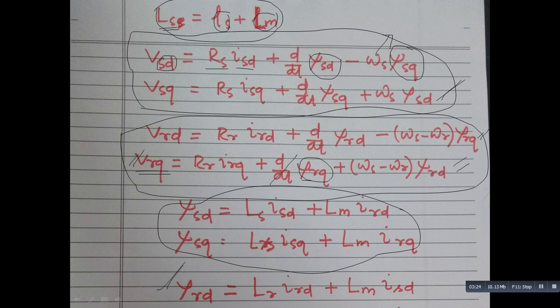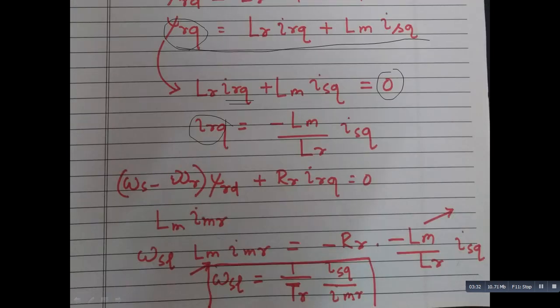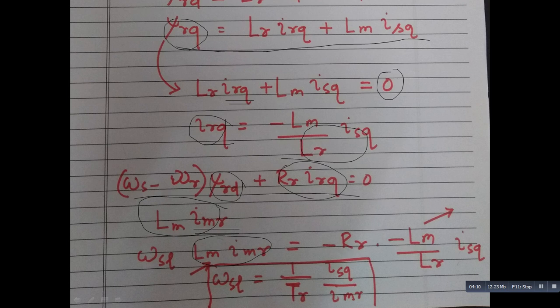Now, if you go to the rotor quadrature axis voltage equation of the rotor, so rotor is short circuited. So this voltage is zero, and for vector control, I am making this also as zero. So this term will vanish, only this term and this term will be remaining. So you see, from there, that equation it is coming. Now, this is your rotor direct axis flux. I am considering it as that mutual into the magnetizing current that I have written as I_mr. So now, if you write in place of psi_rd, L_m into I_mr,